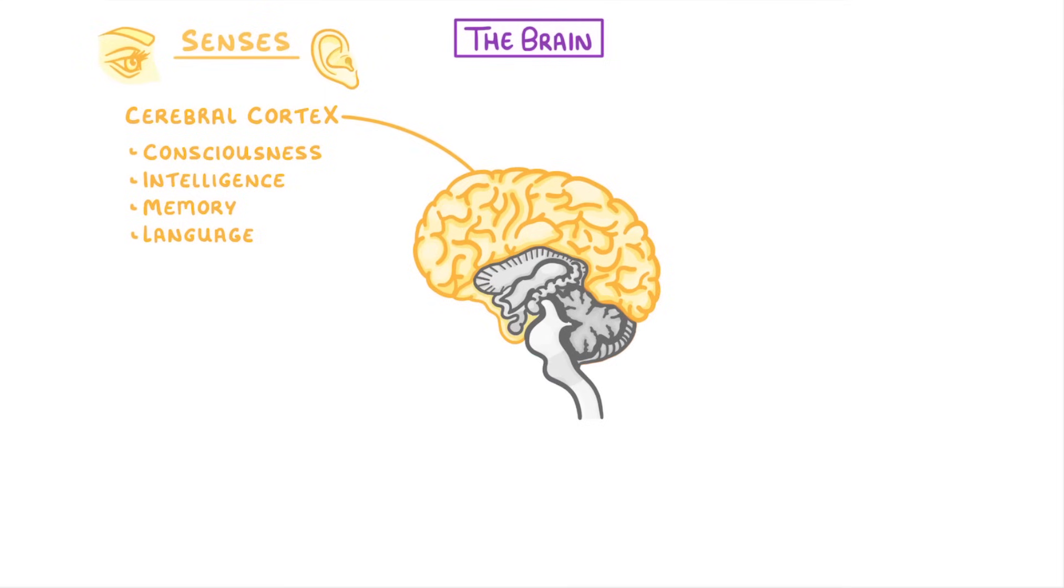Then at the back of the brain, we have the cerebellum, which is responsible for controlling our balance and muscle coordination. So basically making sure that we can sit up straight and walk without falling over.